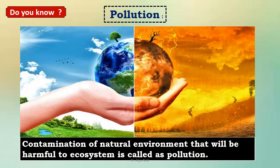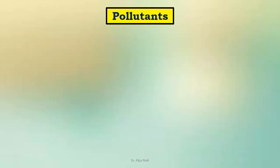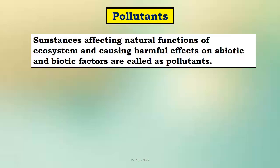Contamination of natural environment that will be harmful to the ecosystem is called pollution. So what gets polluted and what are pollutants? The pollutants are the products which affect the normal functioning of the ecosystem. They affect abiotic and biotic factors.